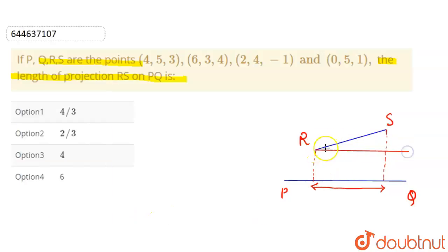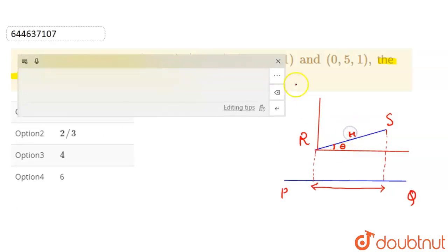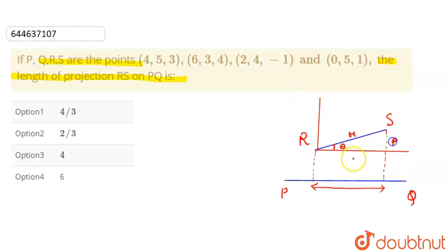Let's say this is the first vector, this is the second vector. So we can say that if this is theta, then this length will be your hypotenuse, this will be your perpendicular, and this will be your base. We know that cos θ is equal to B upon H. Here our hypotenuse is RS, so cos θ = B/RS, and we have to find the base.